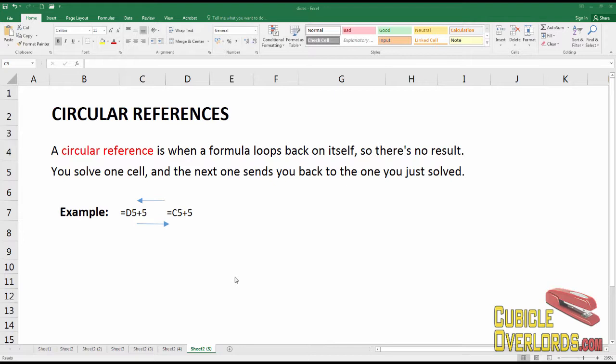Excel needs to arrive at a final result for any operation it does in a formula. Anything you say in a formula has to have a beginning and an end. It's a process where Excel takes a value, adds something to it or does something to it and there it's done. That's the end of the process.